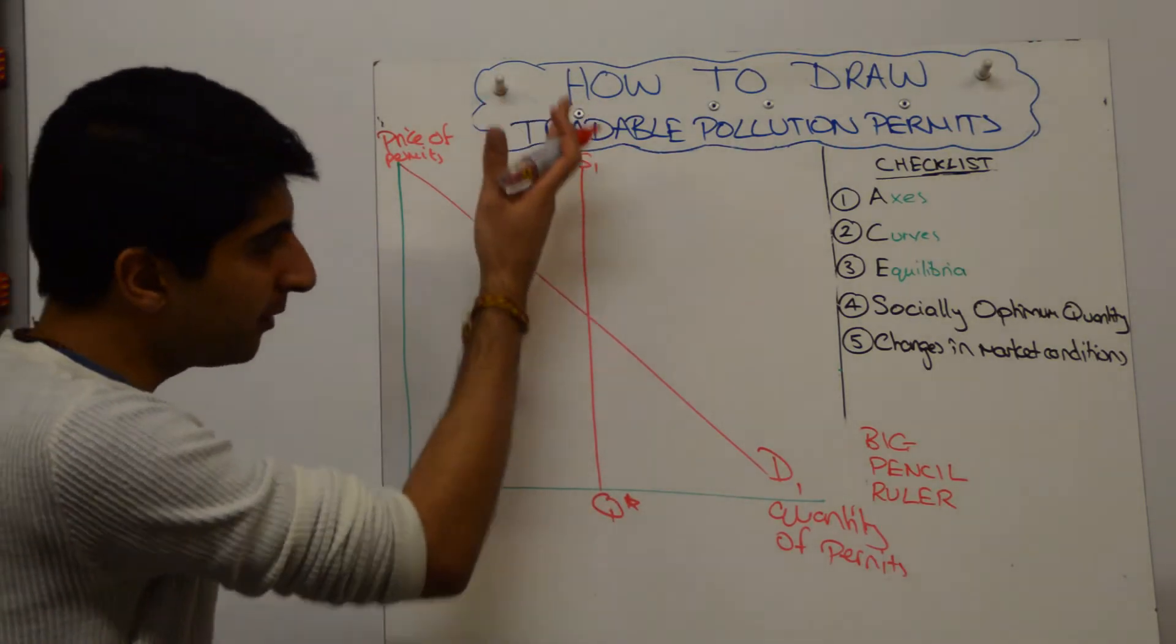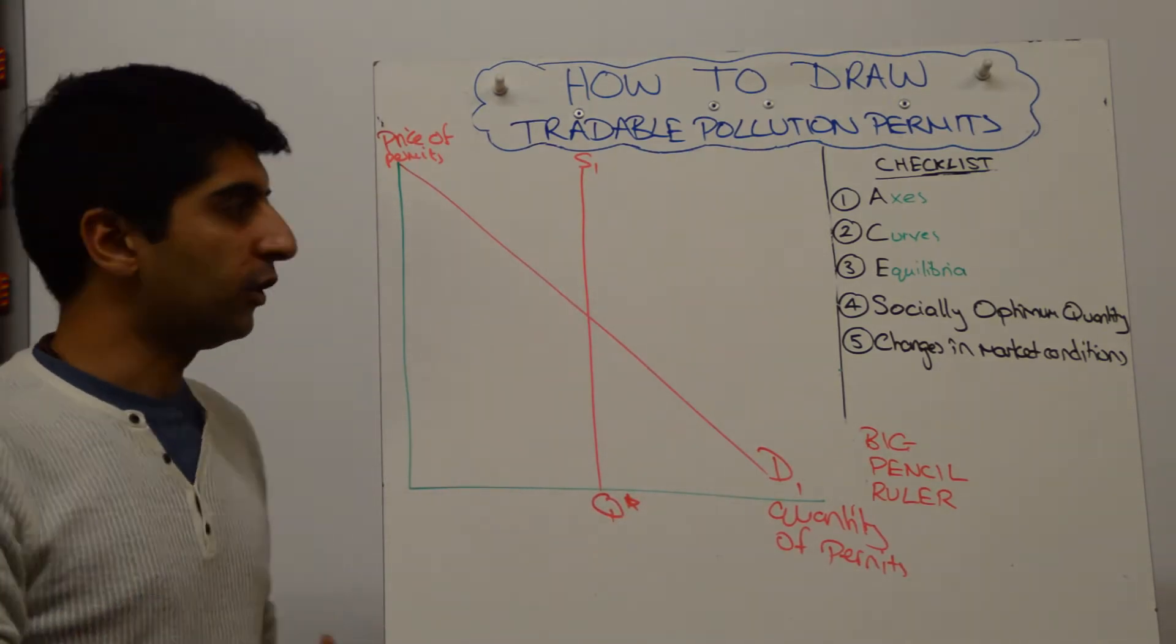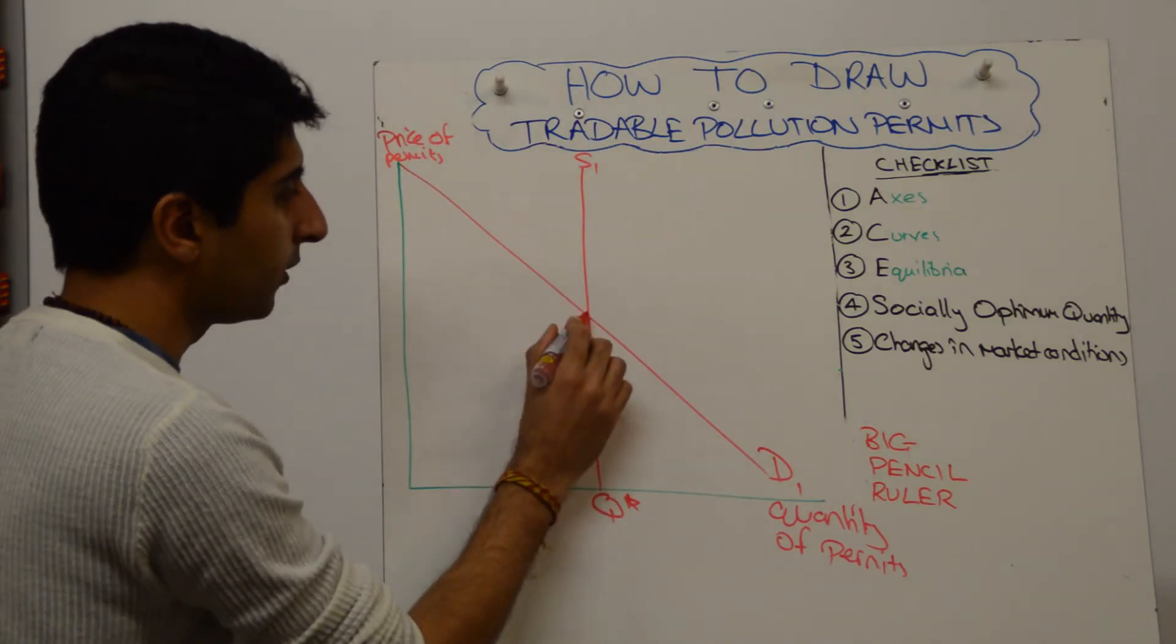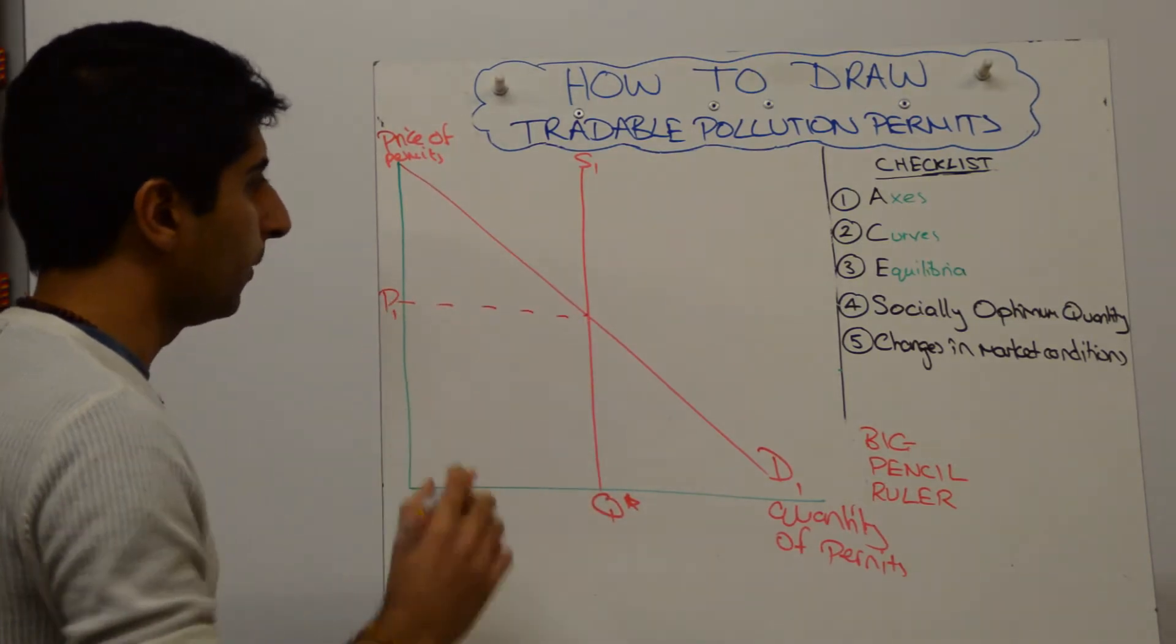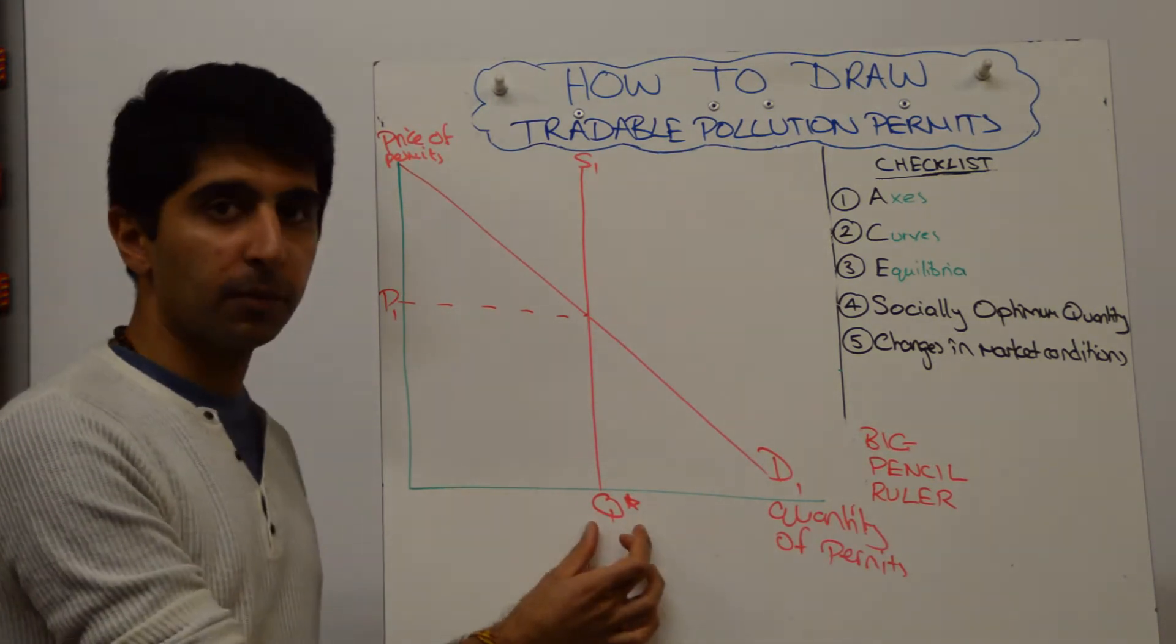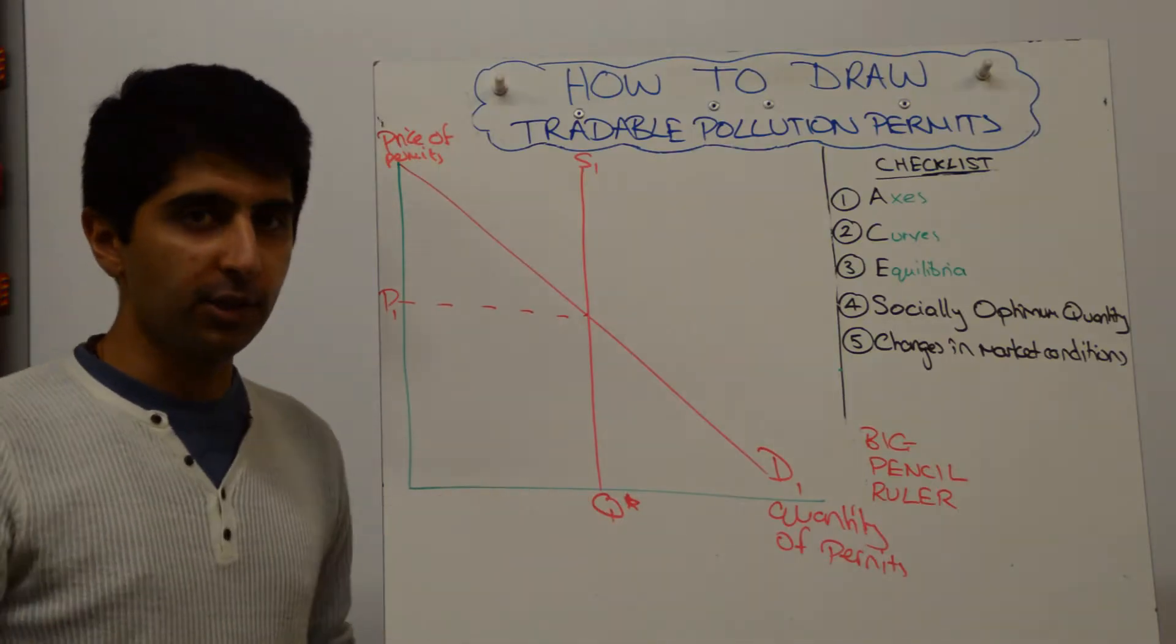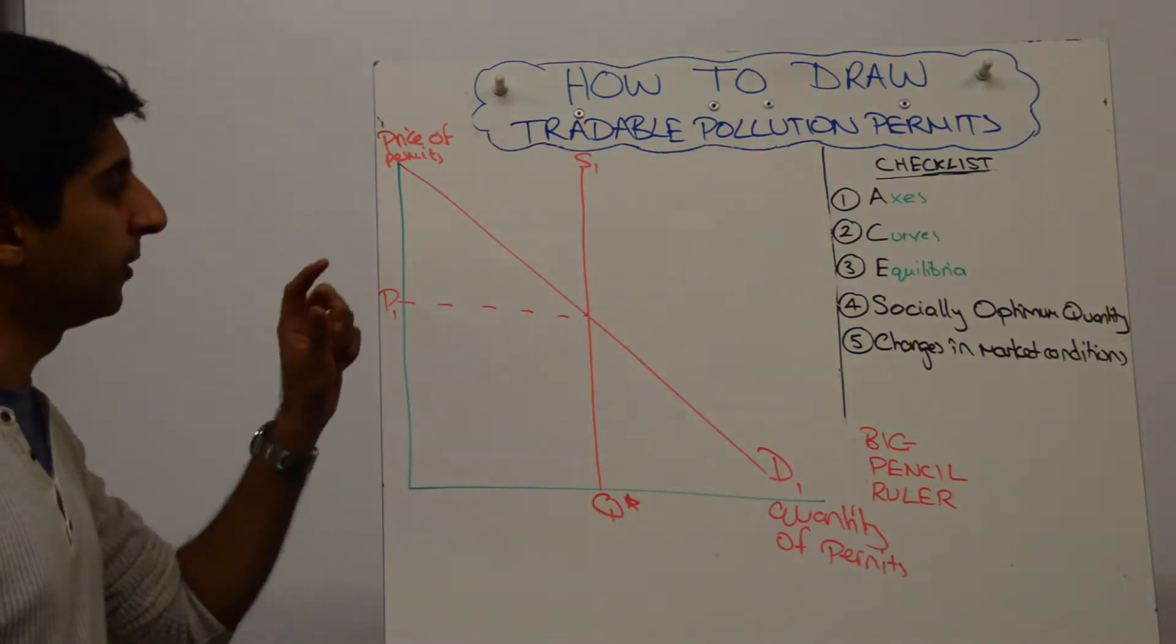So what you're trying to show is that the government fixes the supply at Q-star, which in theory is the socially optimum level. Where supply equals demand, there is a price of permits. So market-based solution, here is the market for permits work. And we get to the social optimum as long as the government has the perfect information of how many permits to issue to get the cap right on pollution.